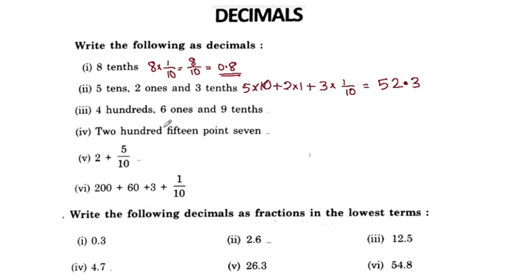406 ones: the 10s place is missing. We have hundreds and ones but tens are missing, so we put 0 in the tens place. The number is 4, 0, 6 — that is 406.